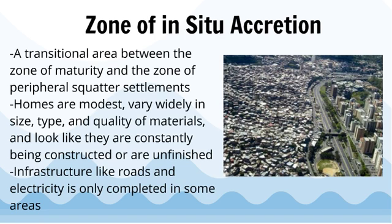The zone of in situ accretion is a transitional area between the zone of maturity and the zone of peripheral squatter settlements. Homes are modest, vary widely in size, type, and quality of materials, and look like they are constantly being constructed or are unfinished. Infrastructure like roads and electricity are only completed in some areas.